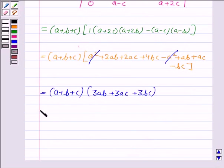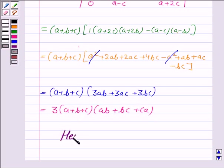This becomes equal to 3 into a plus b plus c into ab plus bc plus ca, and this is what we had to prove. So the result is proved. This completes the question, bye for now, take care, hope you enjoy the session.